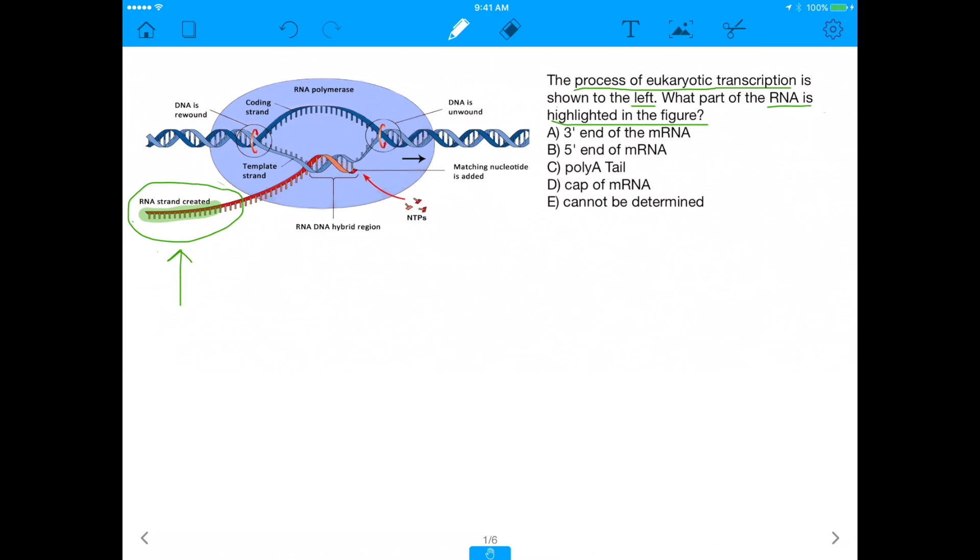And the answer choices are, is this portion the 3' end of the mRNA? Is it the 5' end of the mRNA? Is it the poly-A tail of the mRNA? Is it the cap of the mRNA? Or can it not be determined?